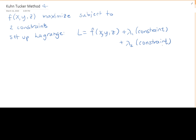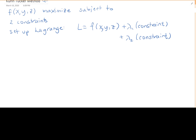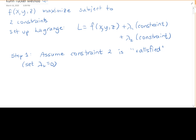Then we do all the same steps as with the Lagrange multiplier method, with one difference. In step one, we assume constraint two is just satisfied — meaning we set lambda two equal to zero — and then solve the remaining Lagrange problem.